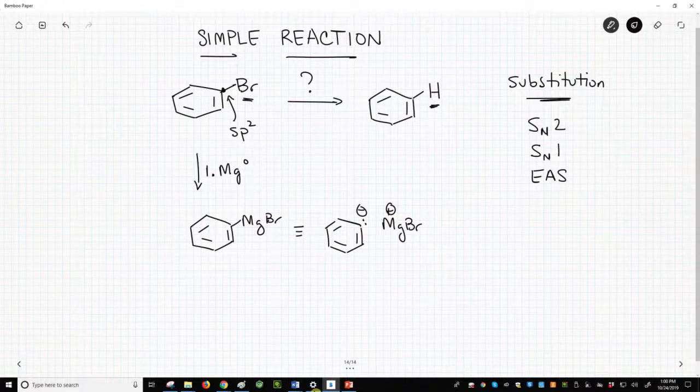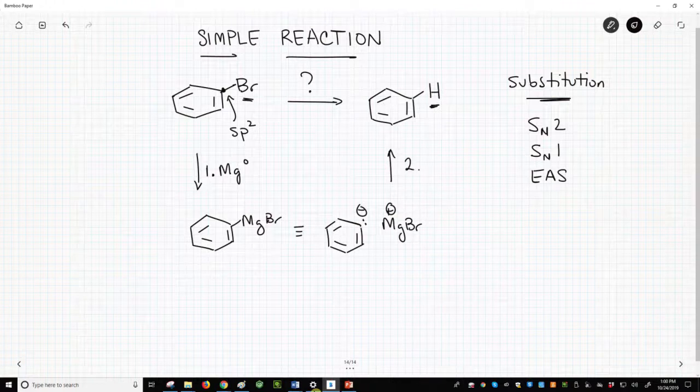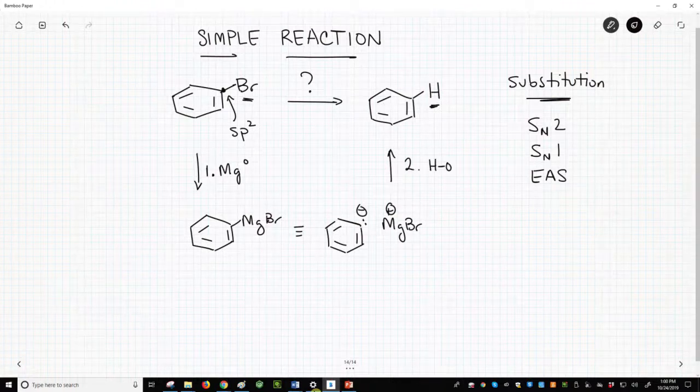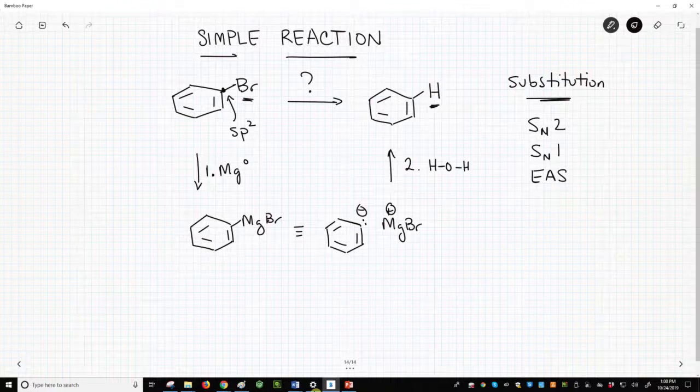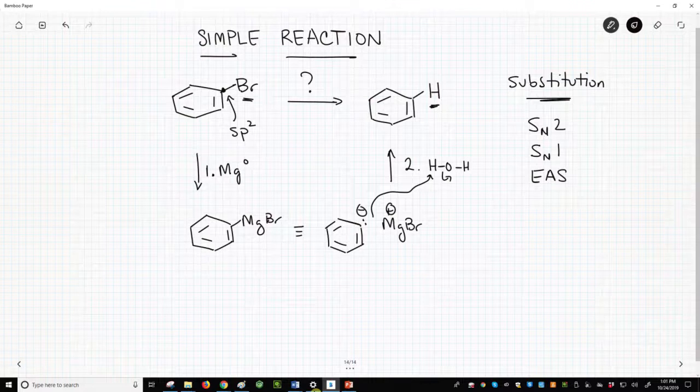So step number two, we'll add water. Water will protonate the carbanion and we'll get our desired product. We have replaced the bromine with a hydrogen.